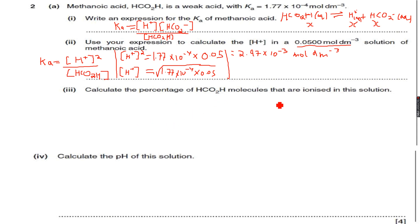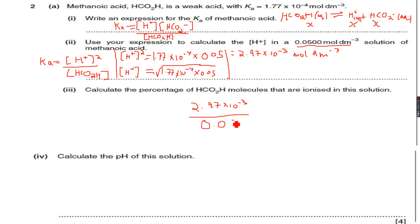Now calculate the percentage of HCO₂H molecules that are ionized in this solution. The percentage will simply be the concentration of H⁺ ions — the amount that has been ionized — divided by the total initial concentration, times 100. This equals 5.95%, so only 5.95% of the HCO₂H molecules dissociated — that's a very small value.